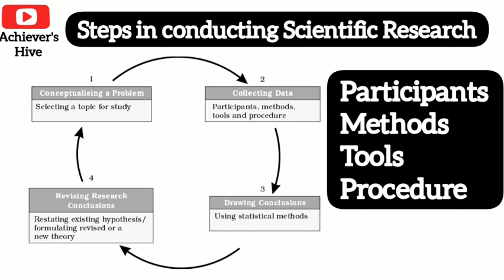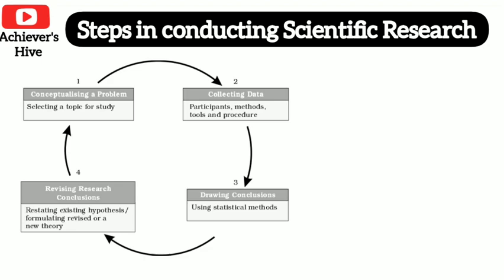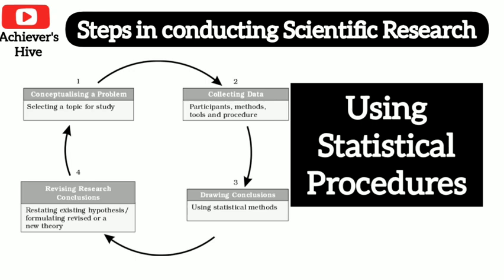Now let's look at drawing conclusions — analyzing the data. After collecting data, we use graphical representations such as pie charts, bar diagrams, and cumulative frequencies to sort out the data. The purpose of analysis is to verify a hypothesis and draw a conclusion accordingly. We use many statistical methods, because in psychology whatever data and methods we apply are all related to statistics. So we use statistical methods and draw conclusions.